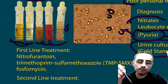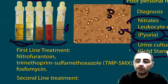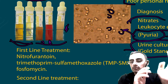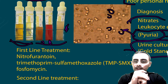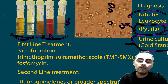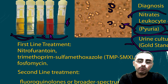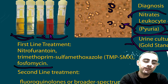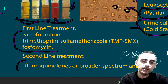First line treatment is antibiotics. The best treatment is based on urine culture — identifying the specific bacteria and using a sensitive antibiotic. Empirically, first line treatments are nitrofurantoin, trimethoprim-sulfamethoxazole, and fosfomycin. If these are not effective, second line treatment is fluoroquinolones and broad-spectrum antibiotics.